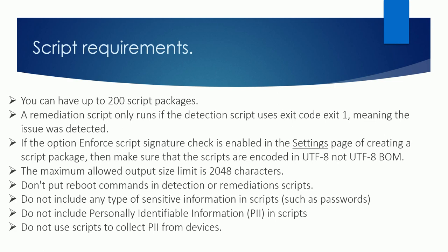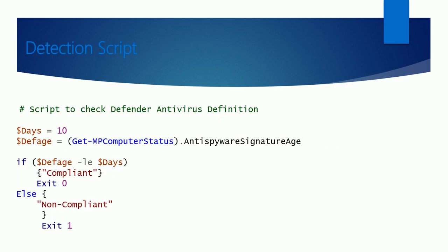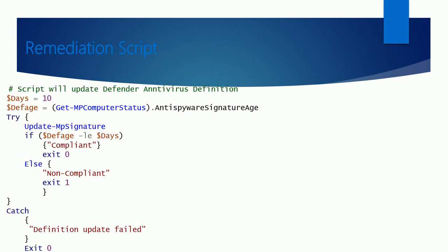Now let's look at the detection script. This is a small script I wrote for Microsoft Defender. It checks if your virus definition is less than 10 days old — if so, the device is marked as compliant and the exit code is 0, meaning the remediation script won't run. If the device is not compliant, it will be detected and the remediation script will run when the exit code is 1.